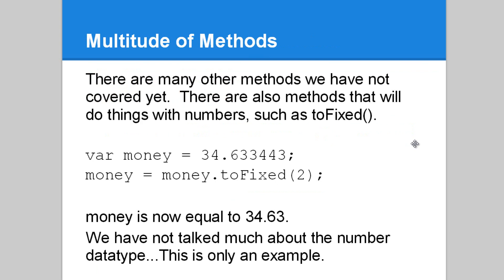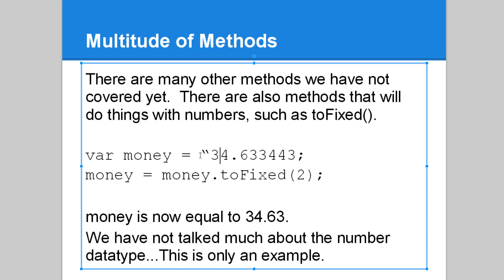There's a multitude of methods that we haven't covered yet. There are also methods that will do things with numbers, such as toFixed. Here we have a variable money, which is equal to 34.633443. toFixed, and then we put a 2, which is our first argument. It's going to cut us down to two decimal places. So, now we get 34.63. We have not talked much about the number data type. This is only an example. And what I mean by that is basically, this is not enclosed within quotation marks. Because if it had quotation marks, then it's a string, not a number, which there's actually a difference here.